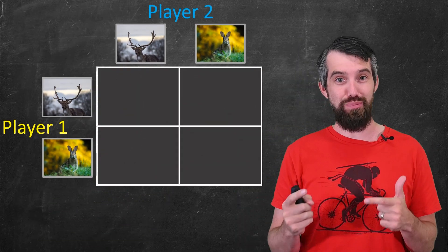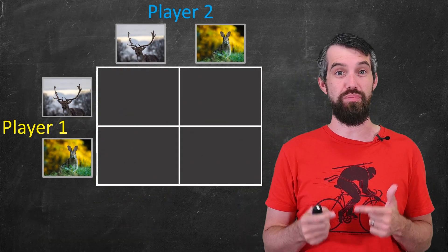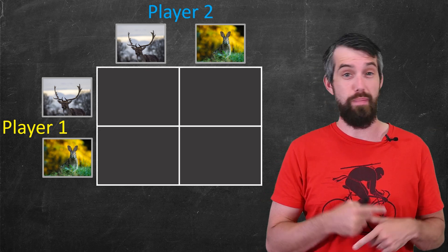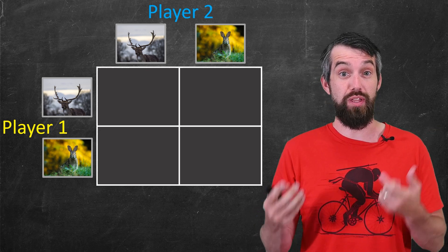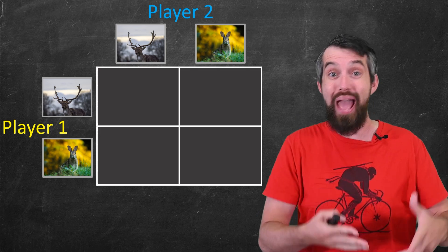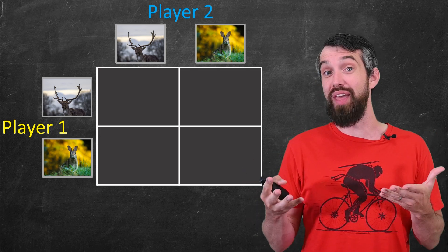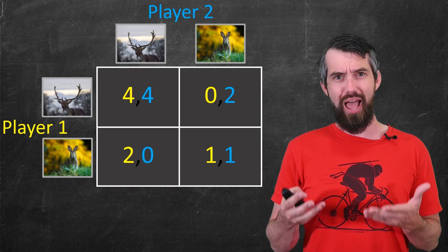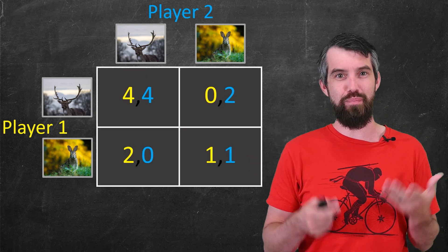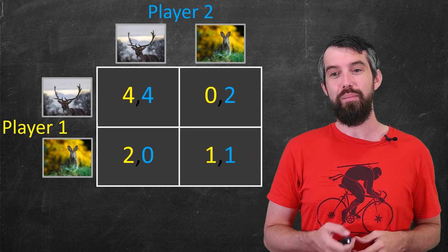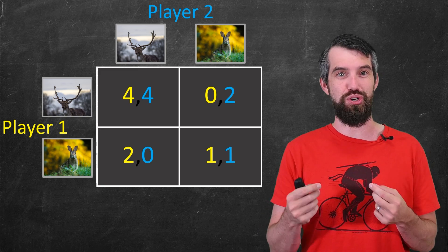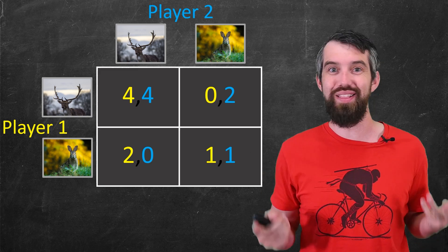Now, I'm going to try to capture the dynamics of this situation using something called a payoff matrix. And both players have the same decision to make. Should they try to hunt the stag? Or should they maybe abandon their post and just go after the hare instead? And I'm going to fill in this payoff matrix with a bunch of different numbers. They're made up. But the point is just to try to capture the dynamics of it.